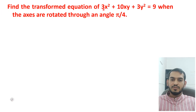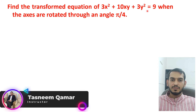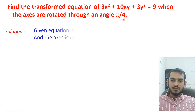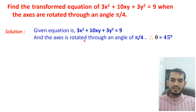Find the transformed equation of 3x² + 10xy + 3y² = 9, when the axes are rotated through an angle of π/4. The given equation is 3x² + 10xy + 3y² = 9 and the axes are rotated through an angle of π/4.